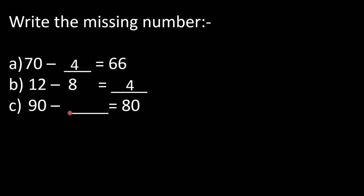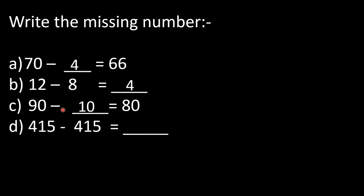In part C: 90 minus dash is equal to 80. Keep 90 in mind and count backward until 80: 89, 88, 87, 86, 85, 84, 83, 82, 81, 80 — that is 10 fingers opened, so we write 10. Or: 0 minus 0 is 0, 9 minus 8 is 1, so answer is 10. In part D: 415 minus 415 — both numbers are same, so answer is 0.